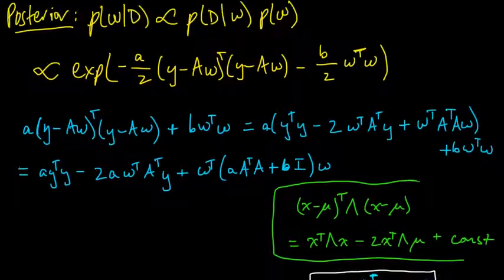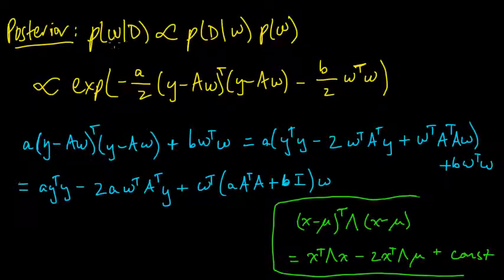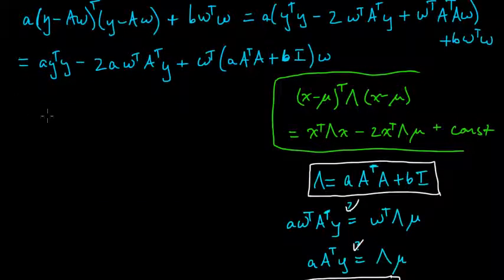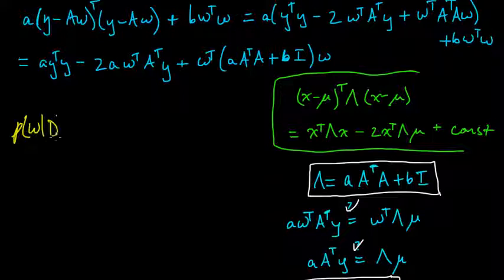And so this shows immediately, so we just get immediately, that this distribution, right, this was, the posterior was proportional to e to the minus one half times this. And so this shows that the posterior,